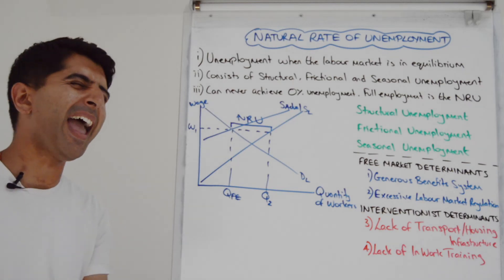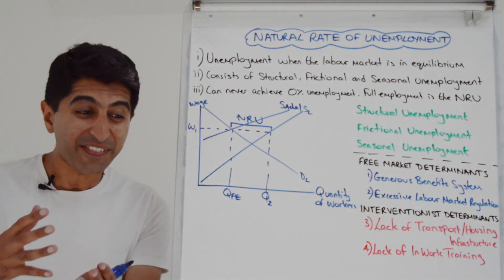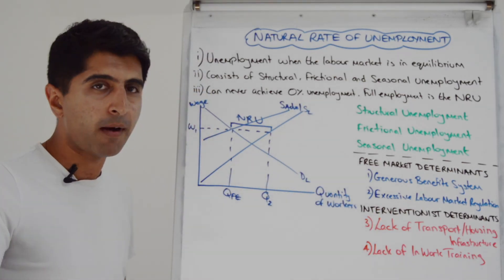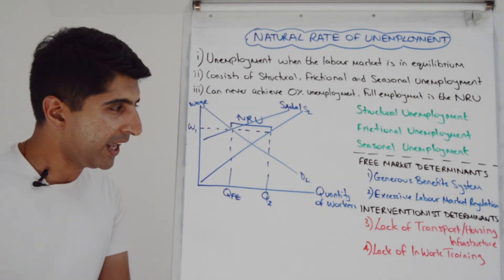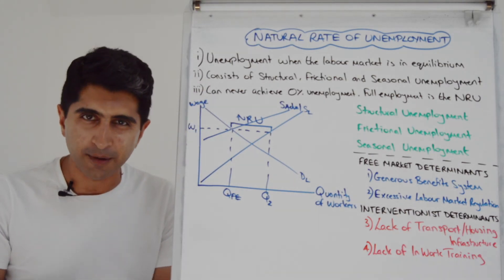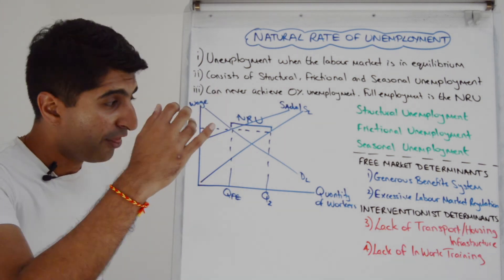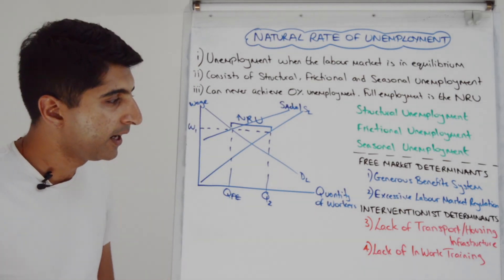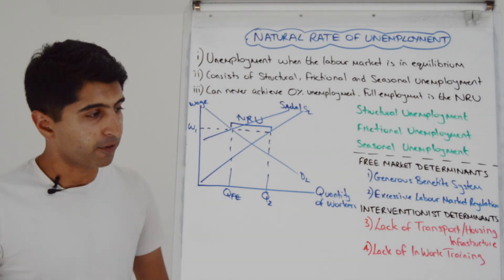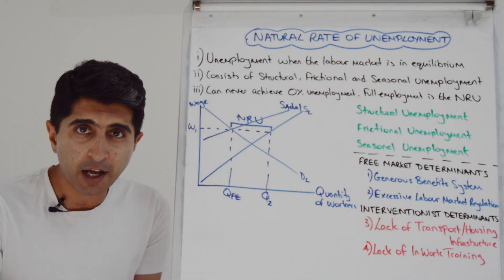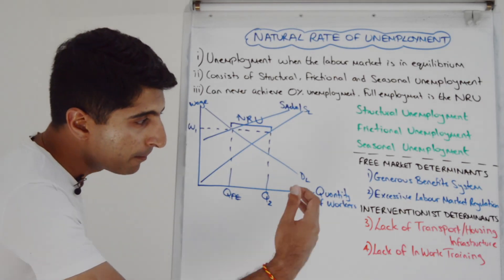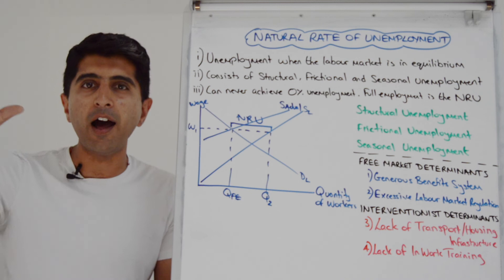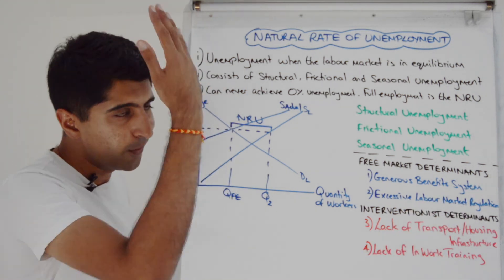Interventionist economists would say it's not too much government intervention — it's not enough. They blame market failures. Because of market failure, there is a lack of transport and housing infrastructure, which can be argued are public goods or merit goods, meaning there won't be enough supply. This drives up geographical immobility of labor and frictional unemployment because people search within a smaller radius. They would also say left to the free market, there'll be a lack of in-work training programs because of positive externalities that are ignored, leading to underproduction. The government needs to provide more of these so workers have transferable skills to take other vacancies, otherwise structural unemployment rises.